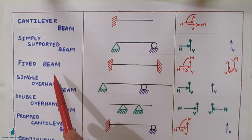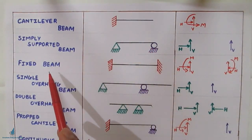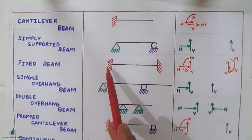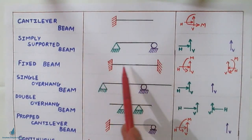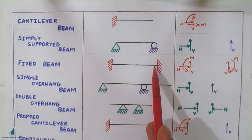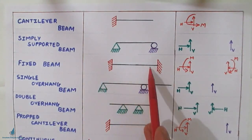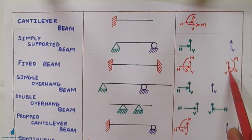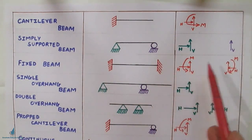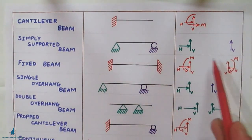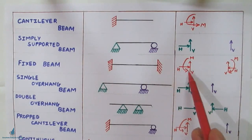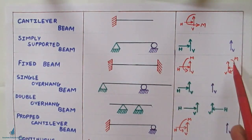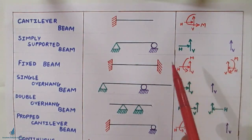The next type of beam is the fixed beam. A fixed beam has both edges fixed. The total unknowns are six: four reactions plus two moments — horizontal, vertical, and moment at each fixed end.